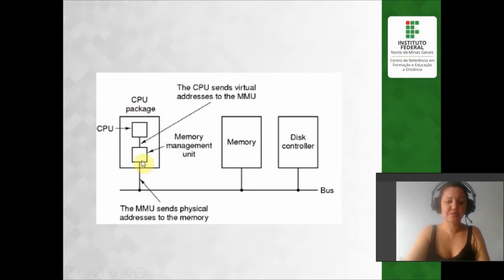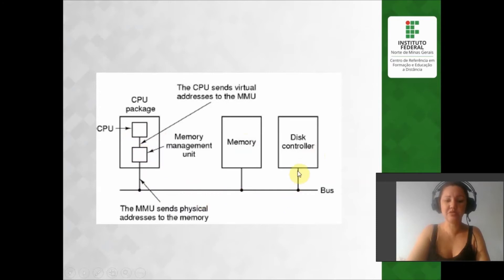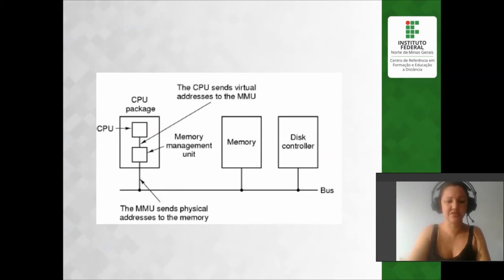Essa MMU permite essa comunicação — ela tem esse canal de comunicação com a memória e com o disco. Se o processador está executando um determinado processo e a informação que ele precisa não está na memória principal, então ele gera uma falta de página. Um sinal é enviado para o disco, ele pega essa página que está lá no disco, carrega ela na memória RAM, e envia um sinal para o processo dizendo que ele pode ser desbloqueado, que a página já está disponível.